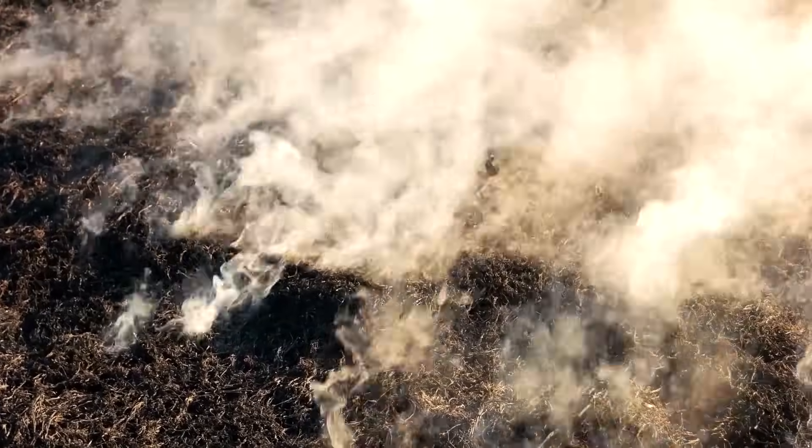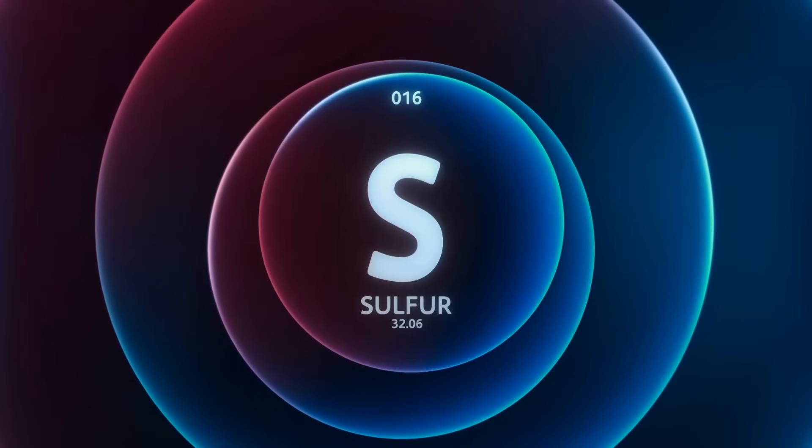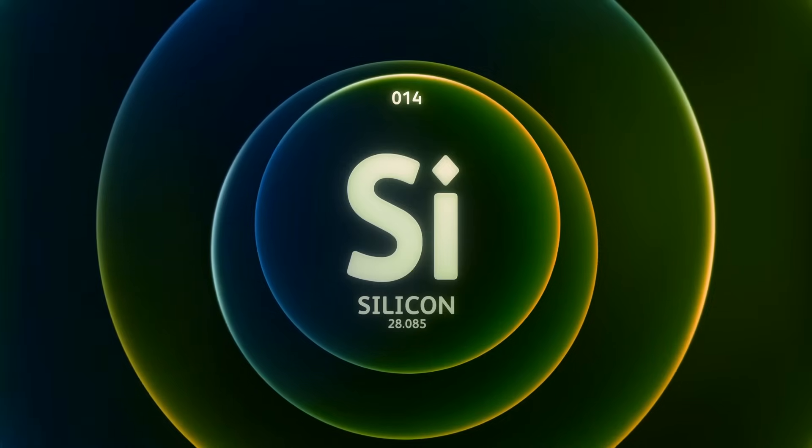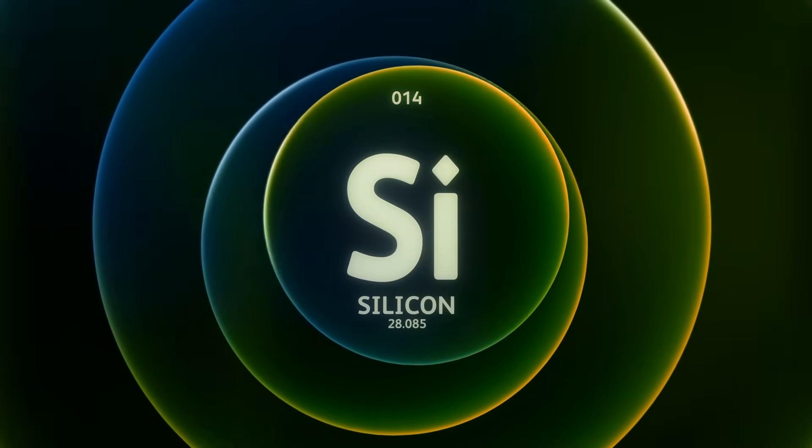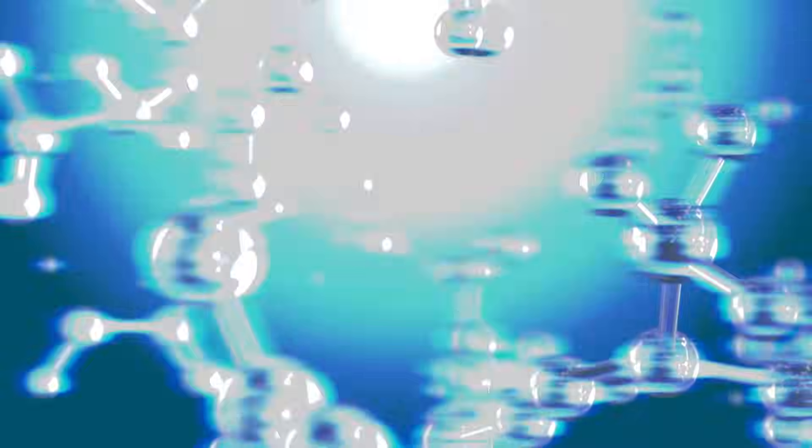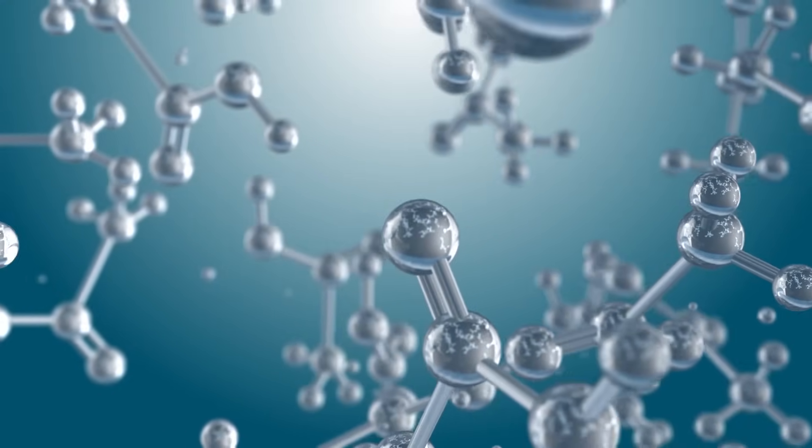The supernova has spat out 10,000 times the mass of the Earth in sulfur, 20,000 times Earth's mass in silicon, 70,000 Earth masses of iron and a million Earth masses of oxygen.